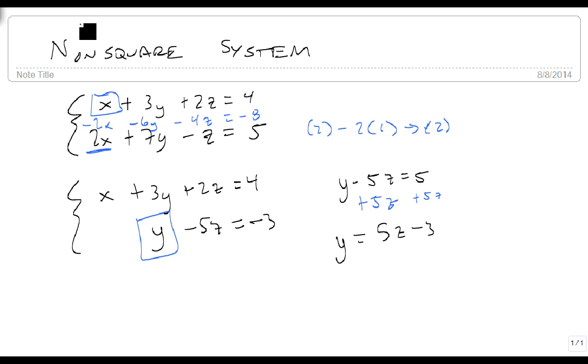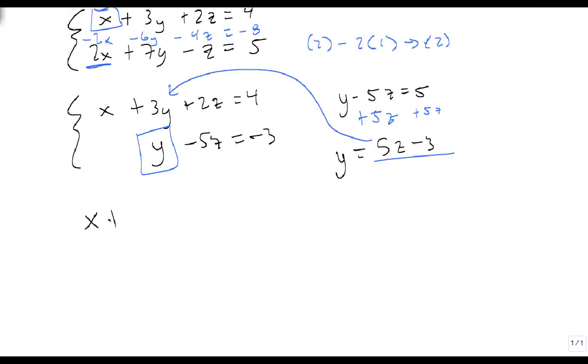And now I'm going to take this, and wherever I have it, it's going to go into the first equation. So now we get x plus 3 times 5z minus 3 plus 2z, and that's going to equal 4. So we distribute, get 15z minus 9 plus 2z equals 4, x plus 17z minus 9 equals 4,